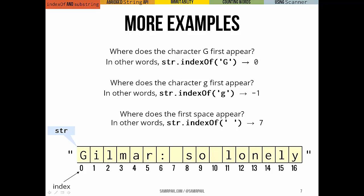Just to hit this home, a couple more examples. Here is a string in honor of one of my former students named Gilmar. It's Gilmar so lonely. If we wanted to find out where's the first appearance of a capital G, that's going to be at zero right there. Lowercase g will give us negative one because there are no lowercase g's here. The first space is at index seven.